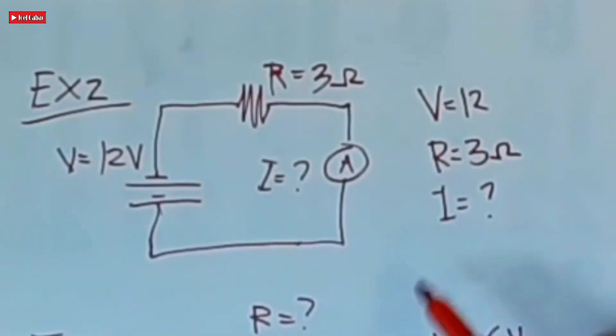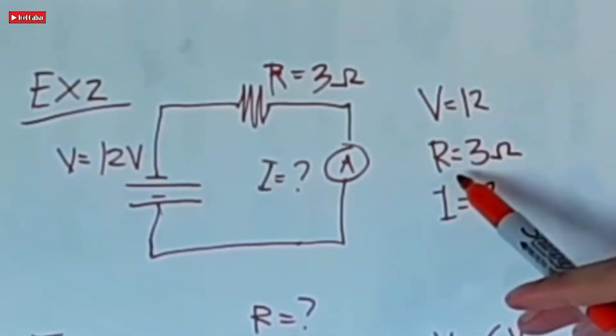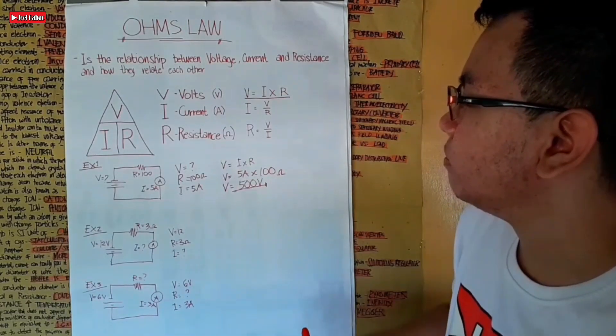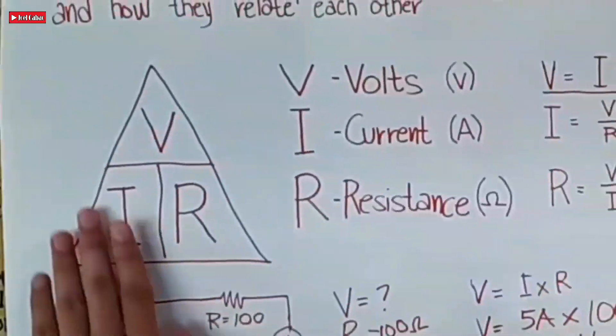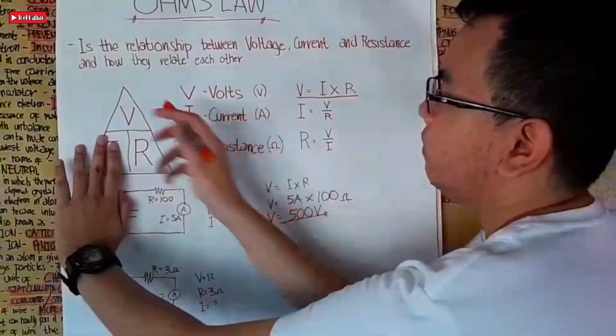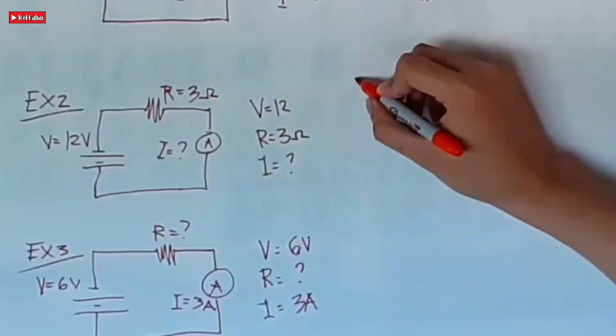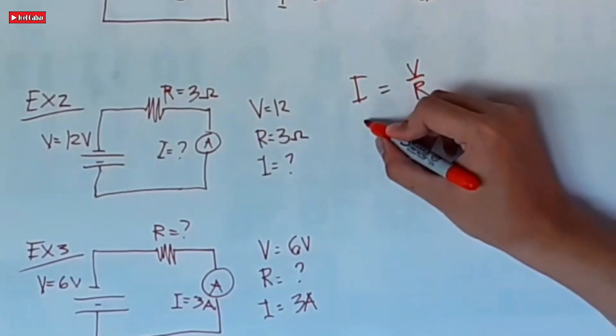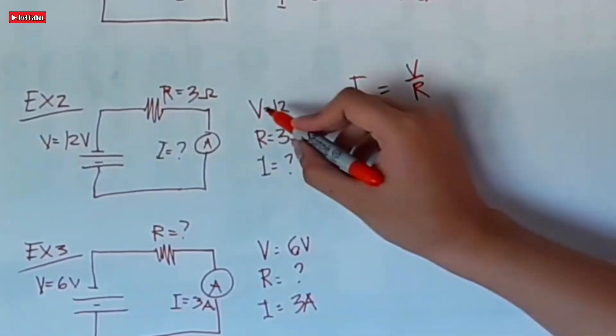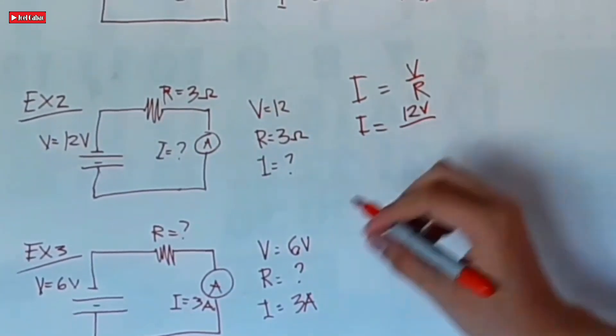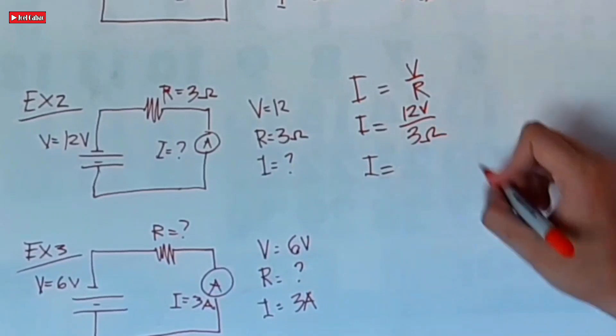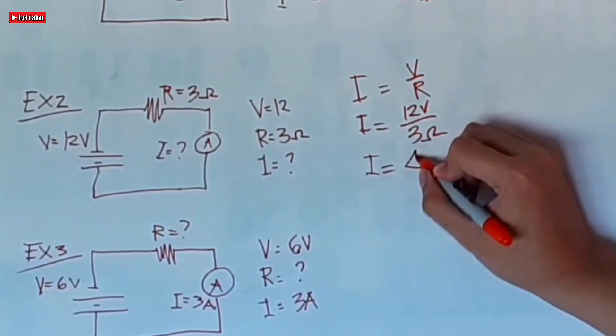Let's go to Example Number 2. Given: voltage is 12V, resistance is 3 ohms, and we need to find I which is current as unknown. Based on the Ohm's Law triangle, I is equal to V over R. So I equals 12 volts divided by 3 ohms, which equals 4 amperes.